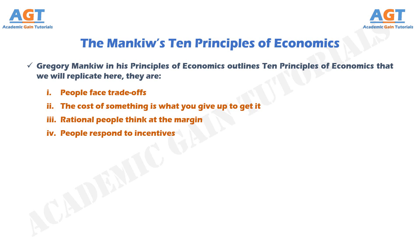Principle No. 5: Trade can make everyone better off. Consider how trade affects your family. When a member of your family looks for a job, he or she competes against members of other families who are looking for jobs. Families also compete against one another when they go shopping, because each family wants to buy the best goods at the lowest prices. In a sense, each family in the economy is competing with all other families. Countries as well as families benefit from the ability to trade with one another. Trade allows countries to specialize in what they do best and to enjoy a greater variety of goods and services.